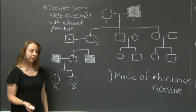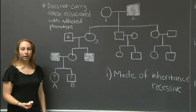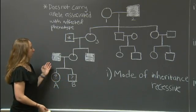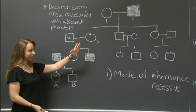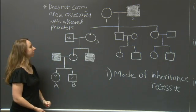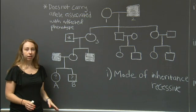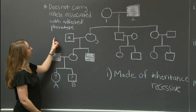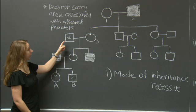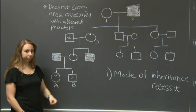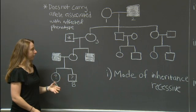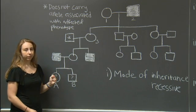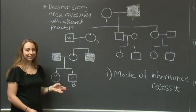So now, do we think this disease is autosomal, or is it X-linked? We look at the pedigree again, and upon closer inspection, we notice that only the affected individuals are males. This is a key characteristic of an X-linked recessive disease. However, we're also given more information that tells us that this individual here does not carry an allele associated with the affected phenotype. This rules out the possibility that this disease could be an autosomal recessive disease. Thus, the most likely mode of inheritance is X-linked recessive.